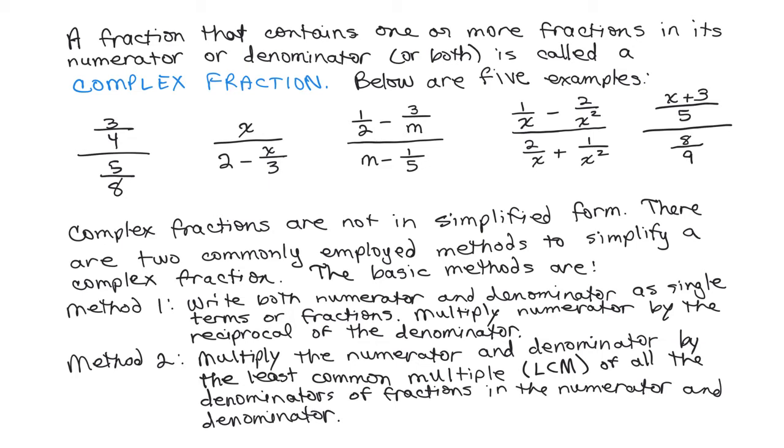Complex fractions are not in simplified form. That means we can simplify further so they don't look complex, and there are two commonly employed methods we could use. The first method is to write both the numerator and denominator as single terms or fractions and then multiply the numerator by the reciprocal of the denominator.